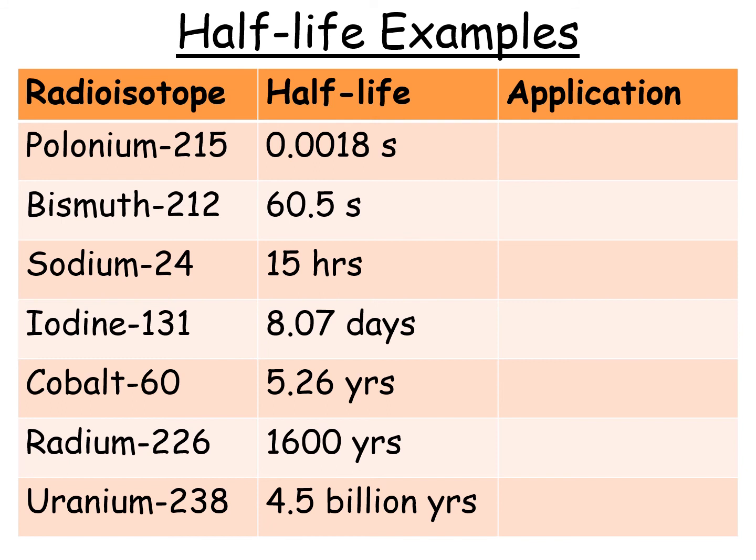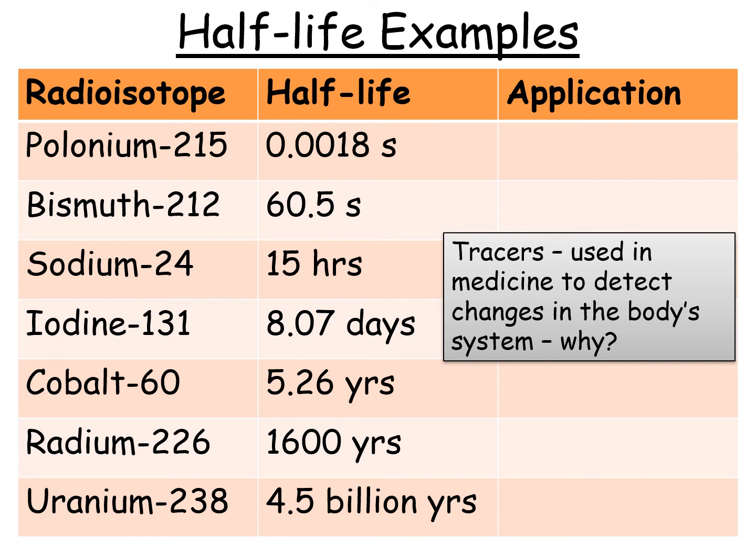The application depends on the half-life. For example, tracers are used in medicine to detect changes in the body's system. A tracer is a radioactive chemical that you inject into somebody's body, and that radioactive chemical will go around the body. Because the radiation hopefully can pass out of the body, you can follow or trace that radiation around the body.